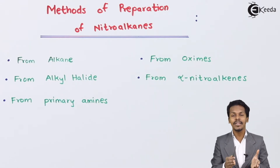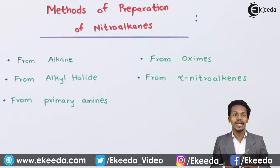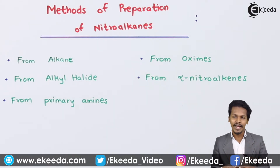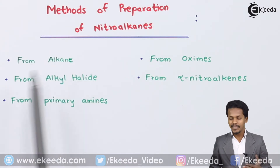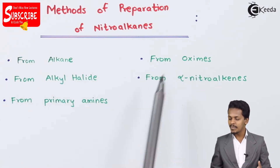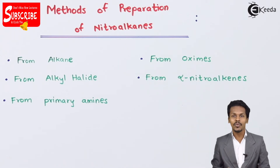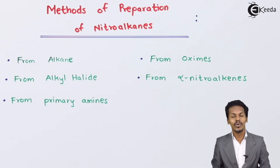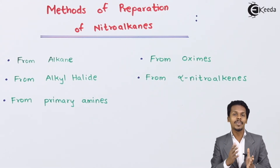This is just a summary of what we are going to discuss in detail in the next lecture. We can easily prepare nitroalkanes from: alkane, alkyl halide, primary amides, oximes, and alpha-nitroalkenes. A separate lecture covering each of these will be in my next video.